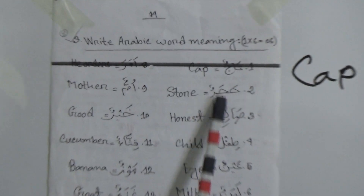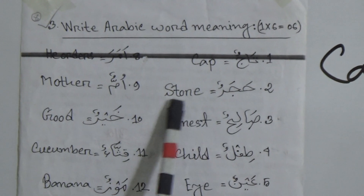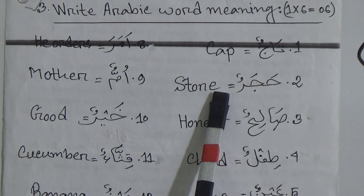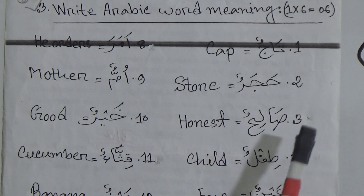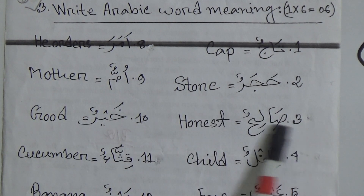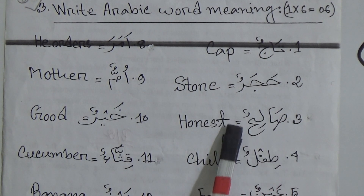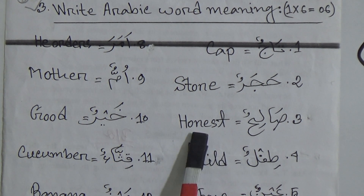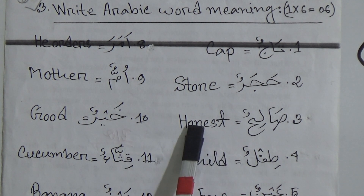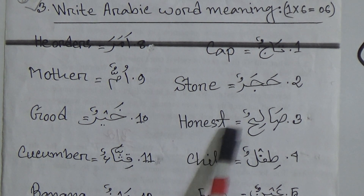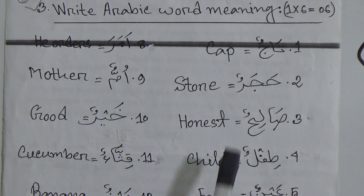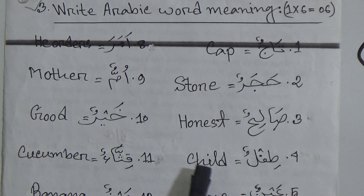Number 2: Hazarun. Hazarun means stone. Number 3: Salihun. Salihun means honest. Number 4: Tiflun. Tiflun means child.